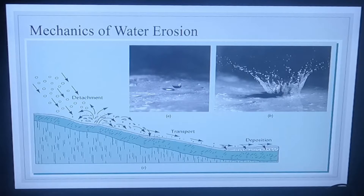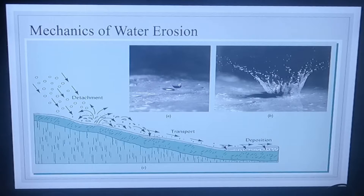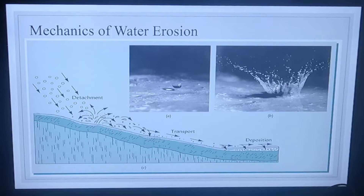There are three mechanisms of erosion — I want to emphasize these are mechanics and types. First, rainfall hits the soil and detaches it. Once detached, water moves from high elevation to low elevation, so it is transported. Finally, it is deposited in the low spot — that's how soils build up in deltas at the bottom of a hill. The mechanics are detachment, transportation, and deposition.